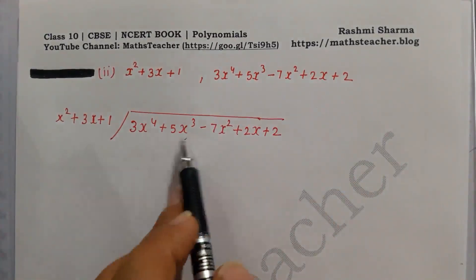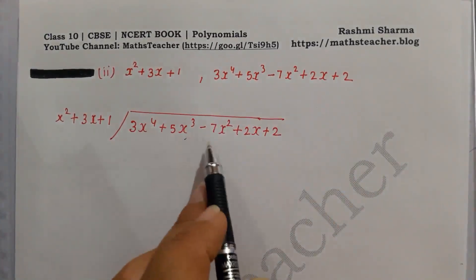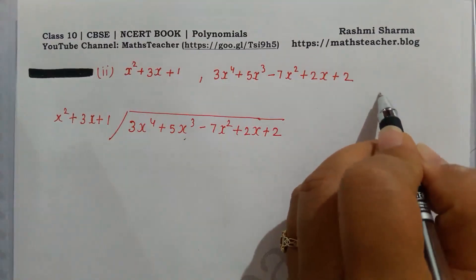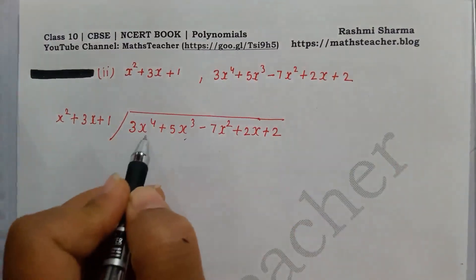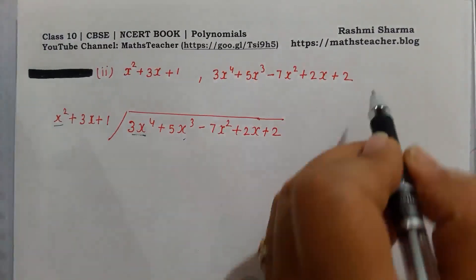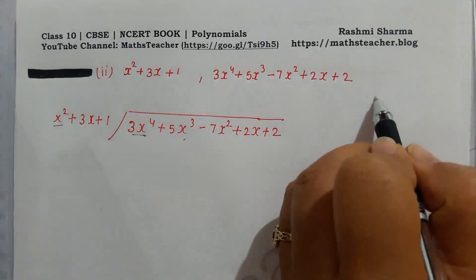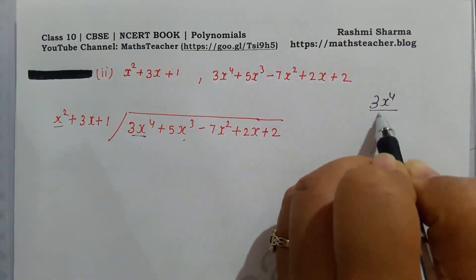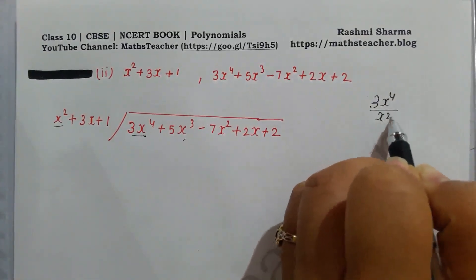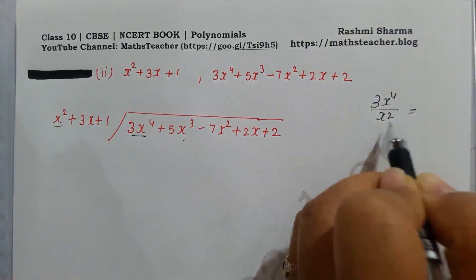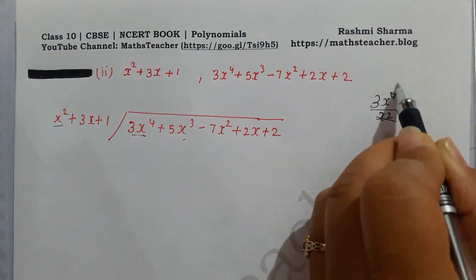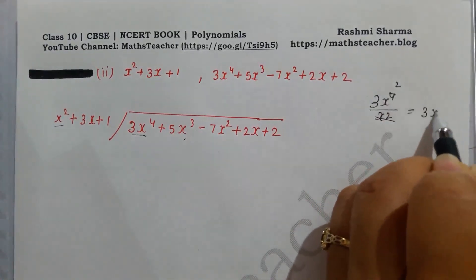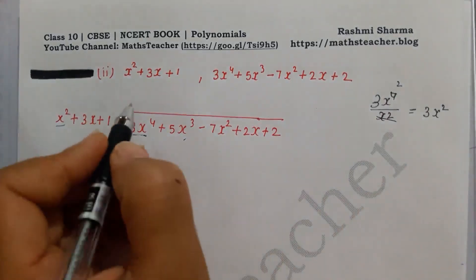We have both polynomials arranged according to degree. Now we will find the quotient. To find the quotient, we divide the first term of the dividend by the first term of the divisor. x⁴ divided by x² — the powers cancel — giving us 3x².